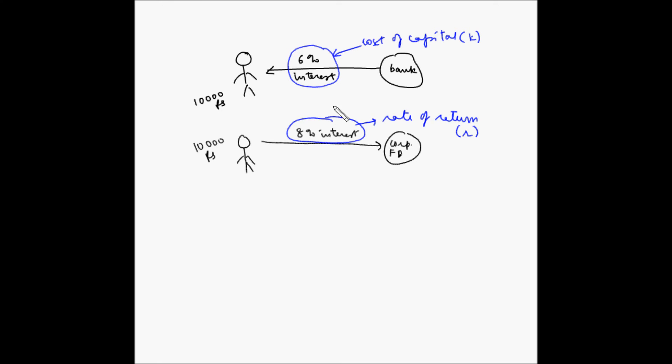As you can see from this example, you will make money only if the interest rate obtained from the corporate FD is more than the rate that you have to pay back to the bank. Basically, in this example, your profit is 8 minus 6, which is 2% of 10,000 rupees.